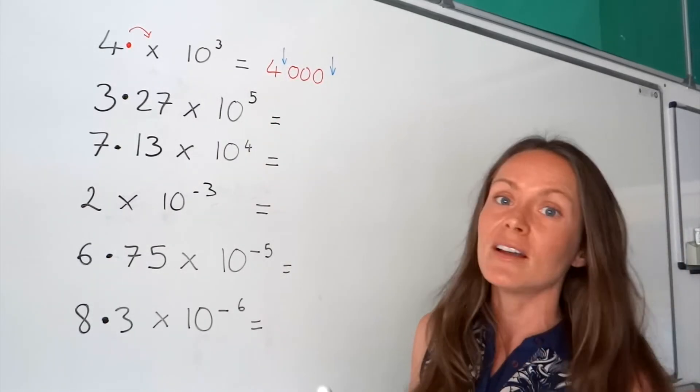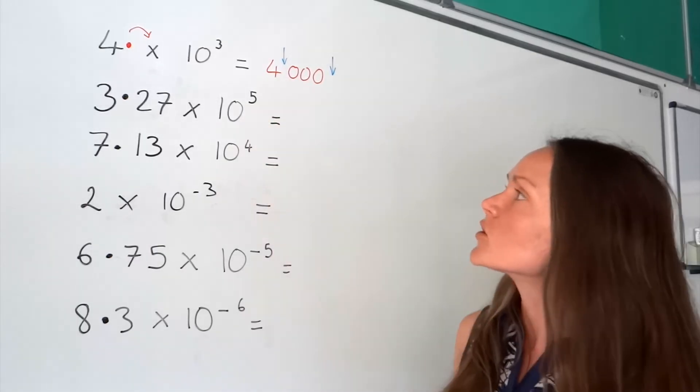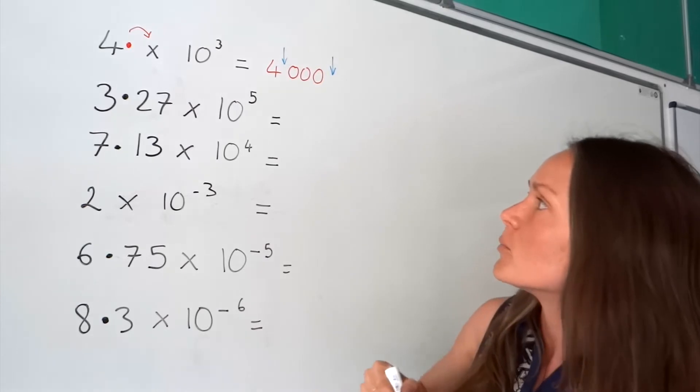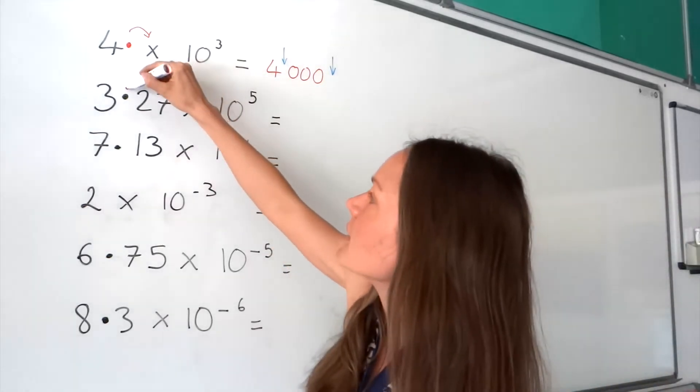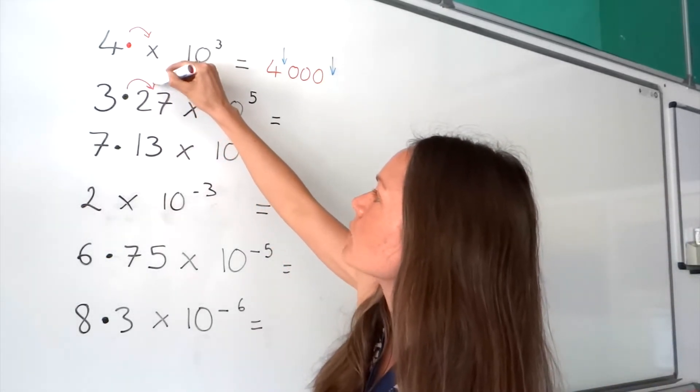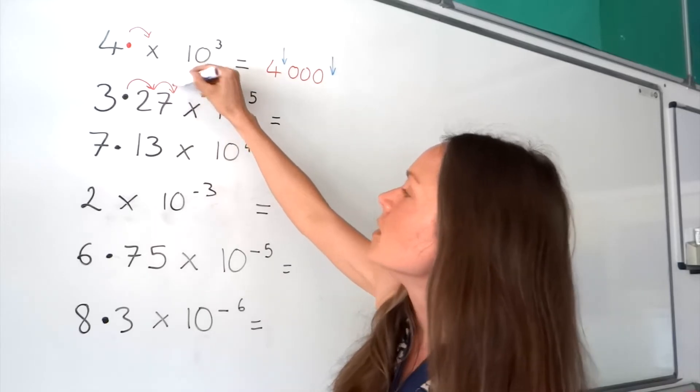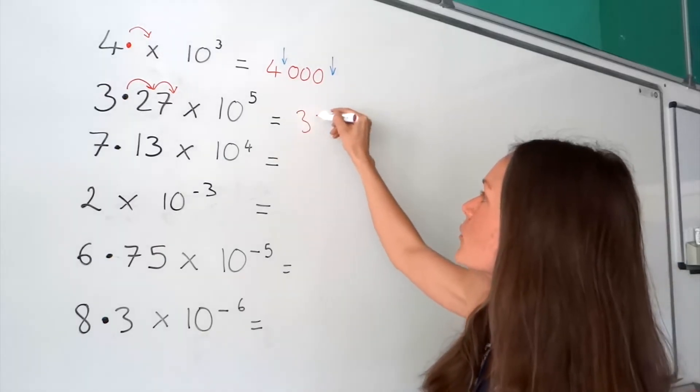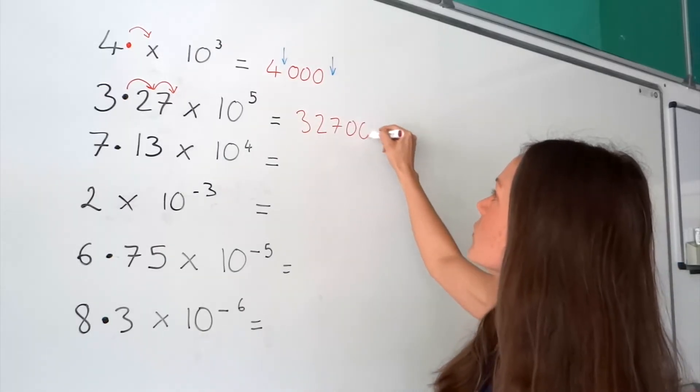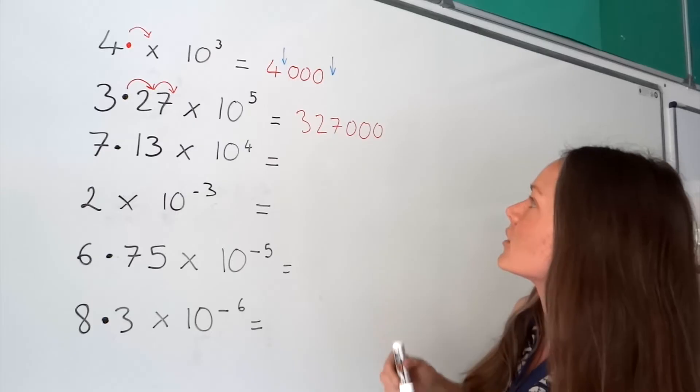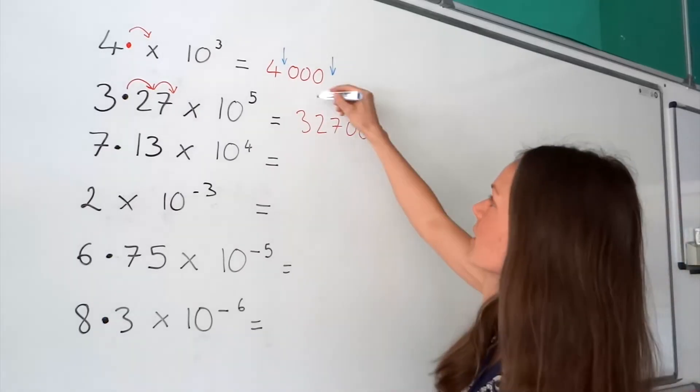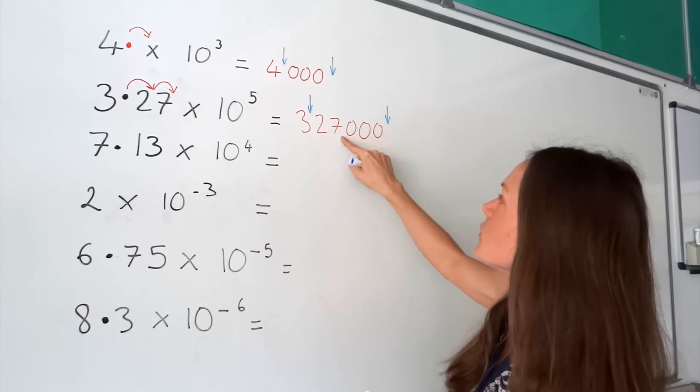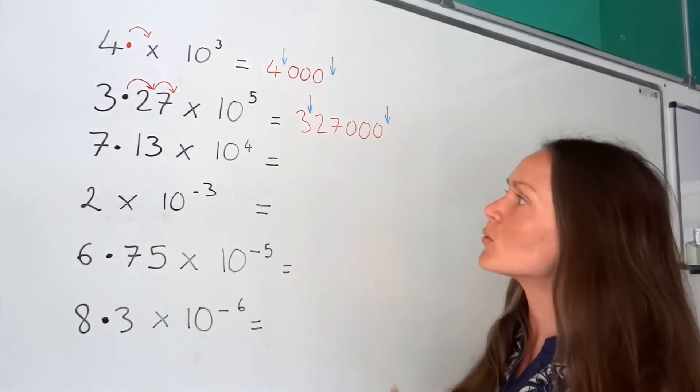Now, in the second one, the power is 5, so we know the decimal is going to move five places to the right because the number is getting bigger again. So here's our decimal. Here we've got 1, 2, so that's two digits. But I need to add three zeros so that the decimal has moved five places. Let's do a check. It used to be here, now it's here. 1, 2, 3, 4, 5. So that one's good.